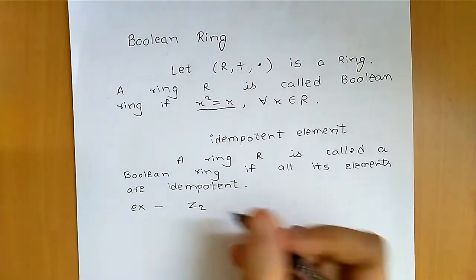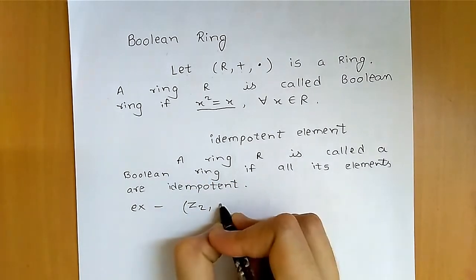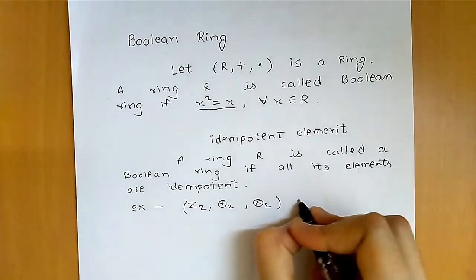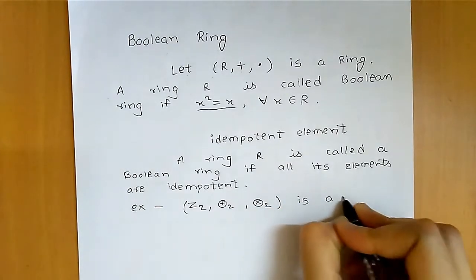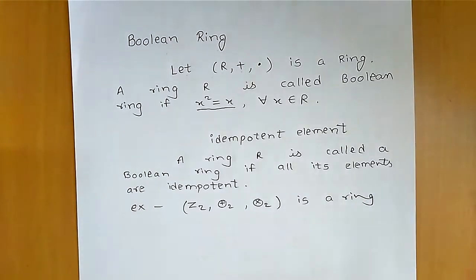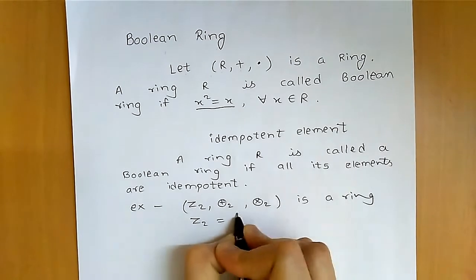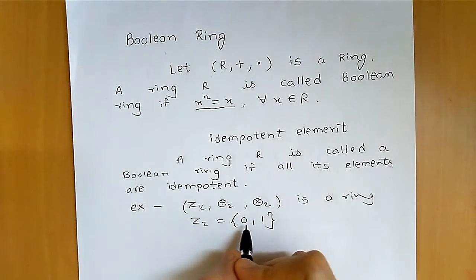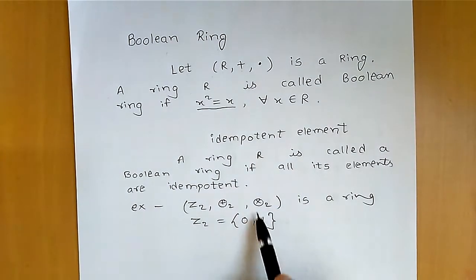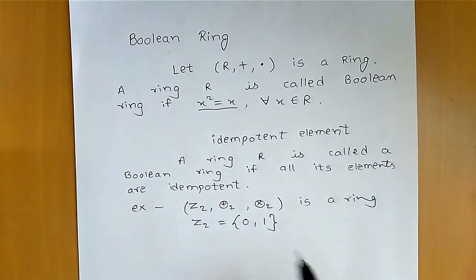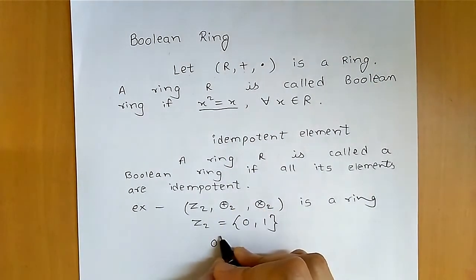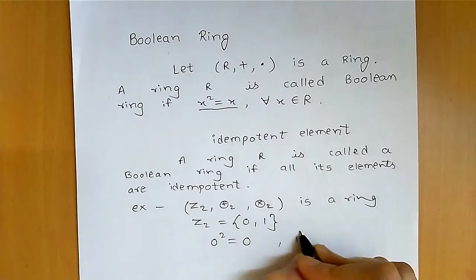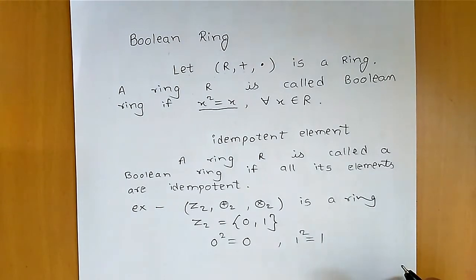Let's see an example. Z₂ — the ring under addition modulo 2 and multiplication modulo 2 — is a ring. The elements in Z₂ are 0 and 1. Now we will see whether these two elements satisfy the property or not. So: 0 squared is equal to 0, and 1 squared is equal to 1.